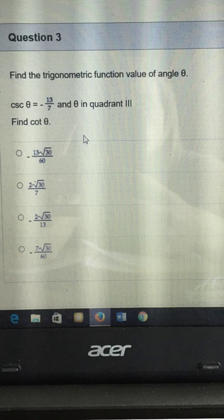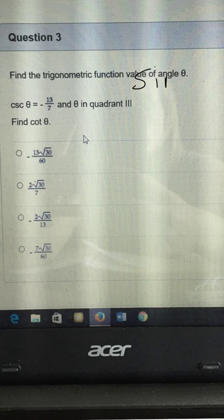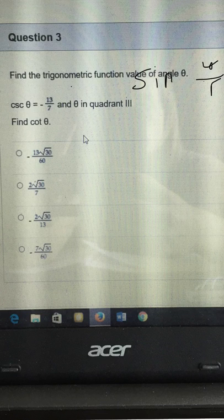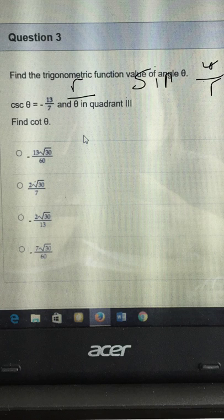If they tell you what cosecant is, cosecant is the reciprocal of sine. Sine is y over r, so what they're giving you is the reciprocal of that, or r over y. The 13 over 7 - the top number is going to be r and the bottom number is going to be y. Now to determine which is positive and negative, r is always positive.